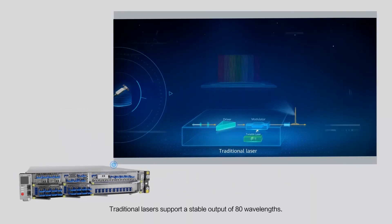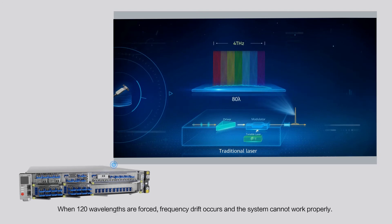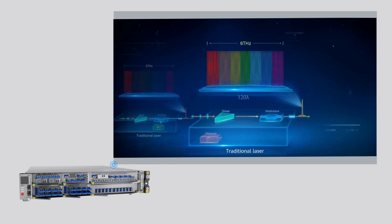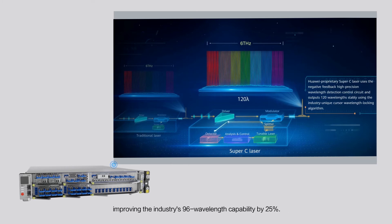Traditional lasers support a stable output of 80 wavelengths; when 120 wavelengths are forced, frequency drift occurs and the system cannot work properly. Huawei's proprietary Super C laser uses a unique cursor locking algorithm to output 120 wavelengths in the extended C band, improving the industry's 96-wavelength capability by 25%. In the future, it will support smooth expansion to L band and up to 240 wavelengths.